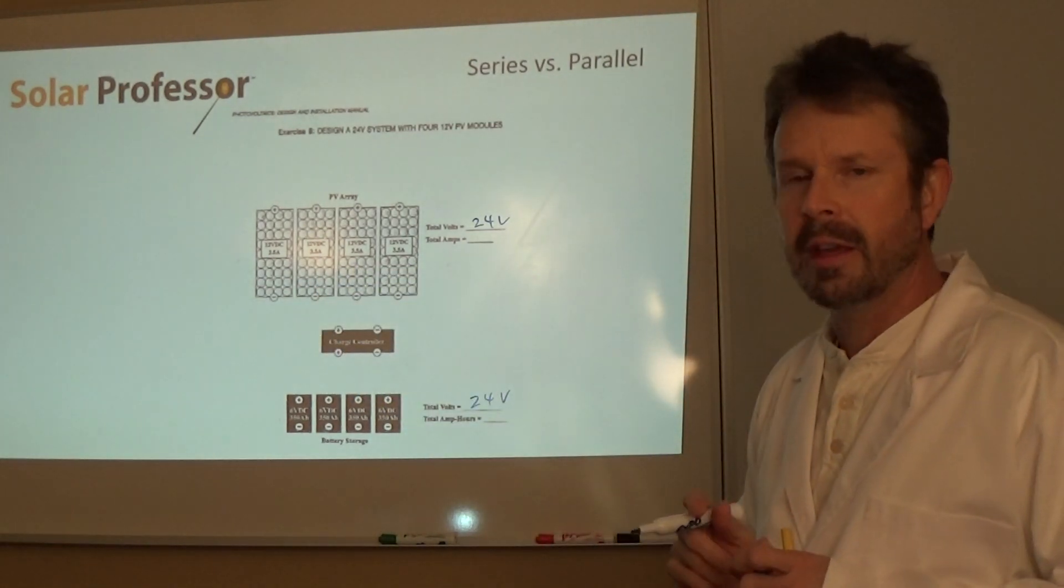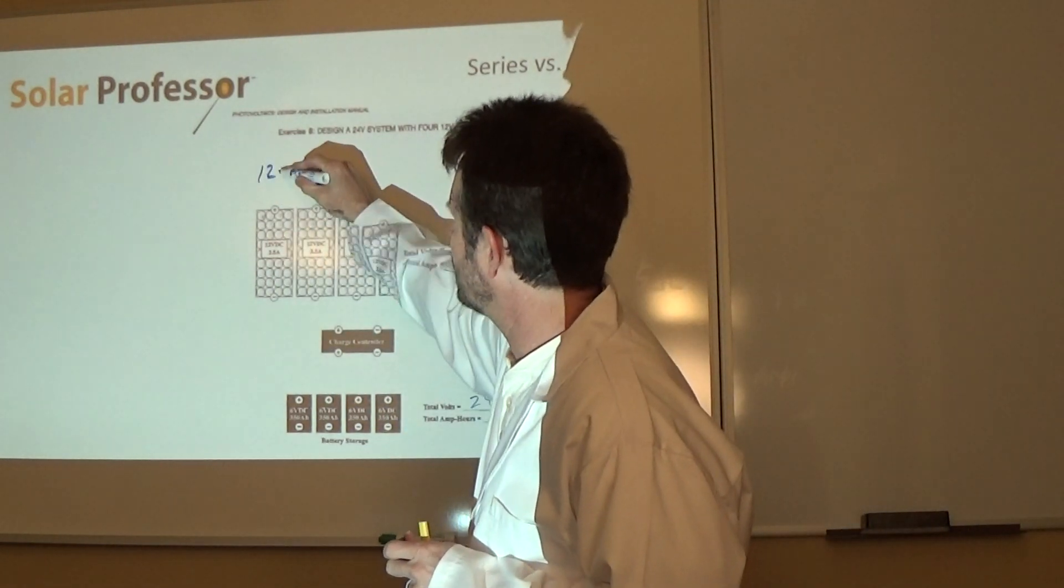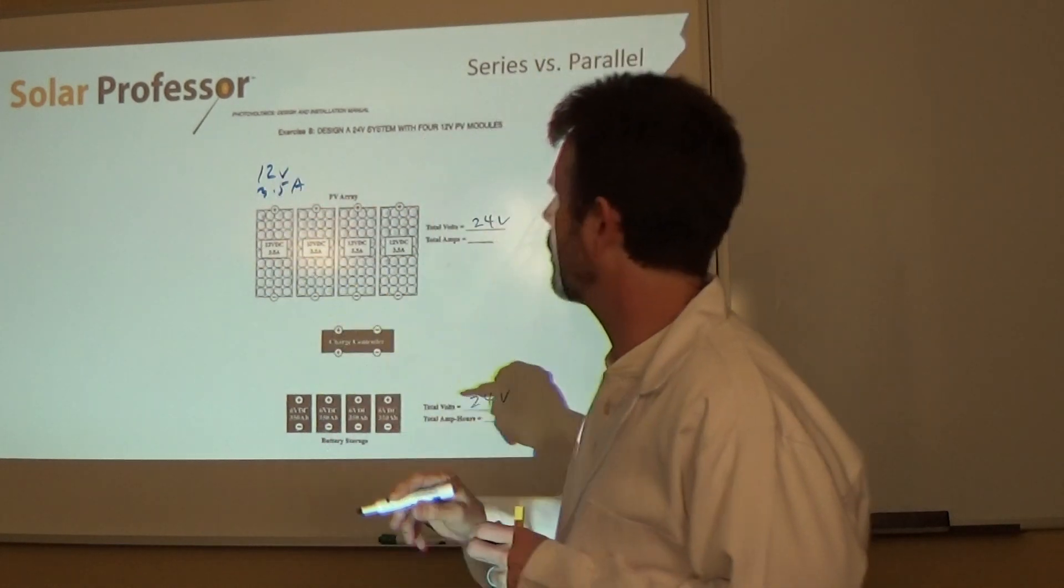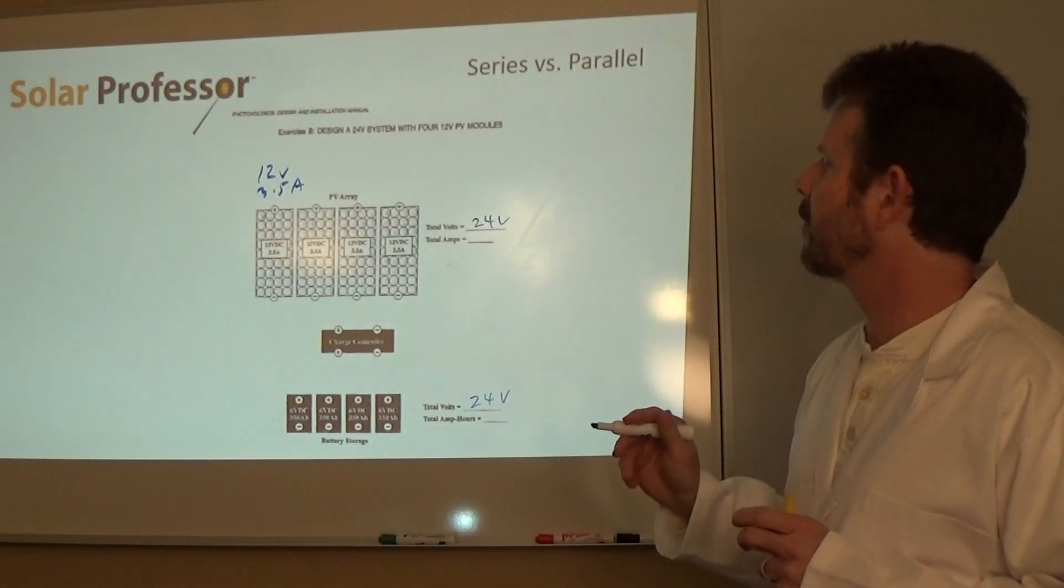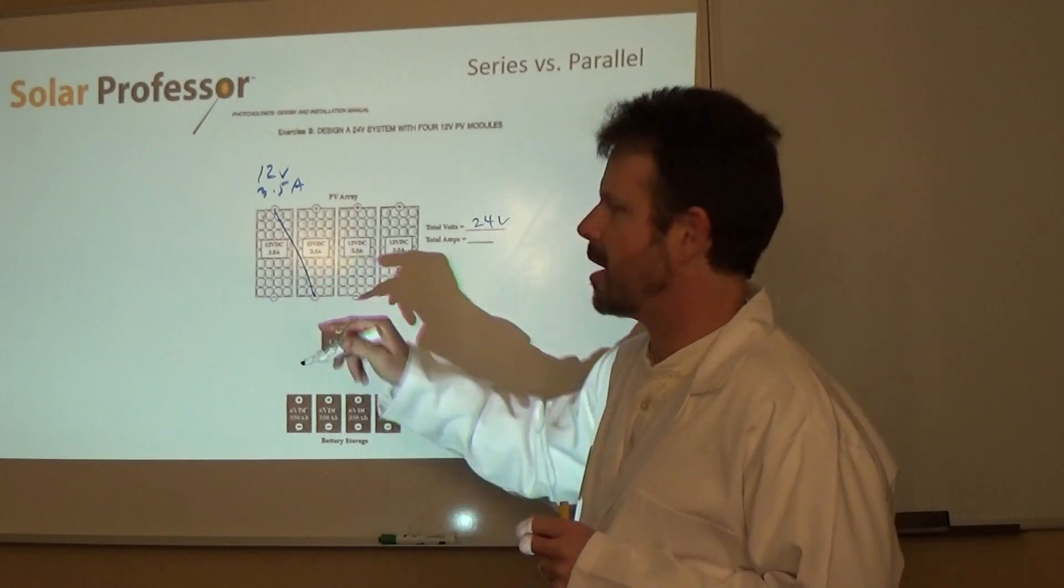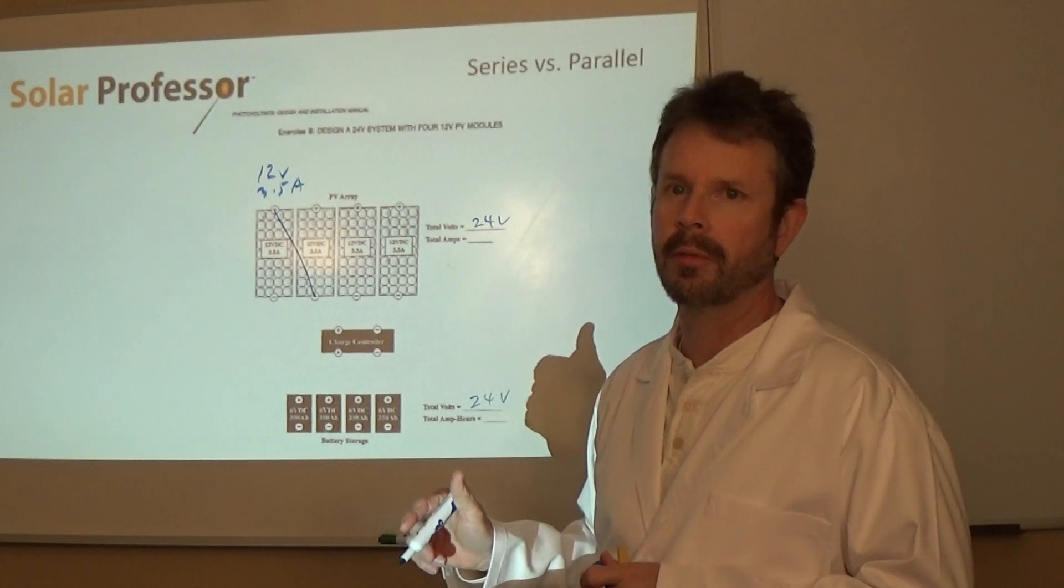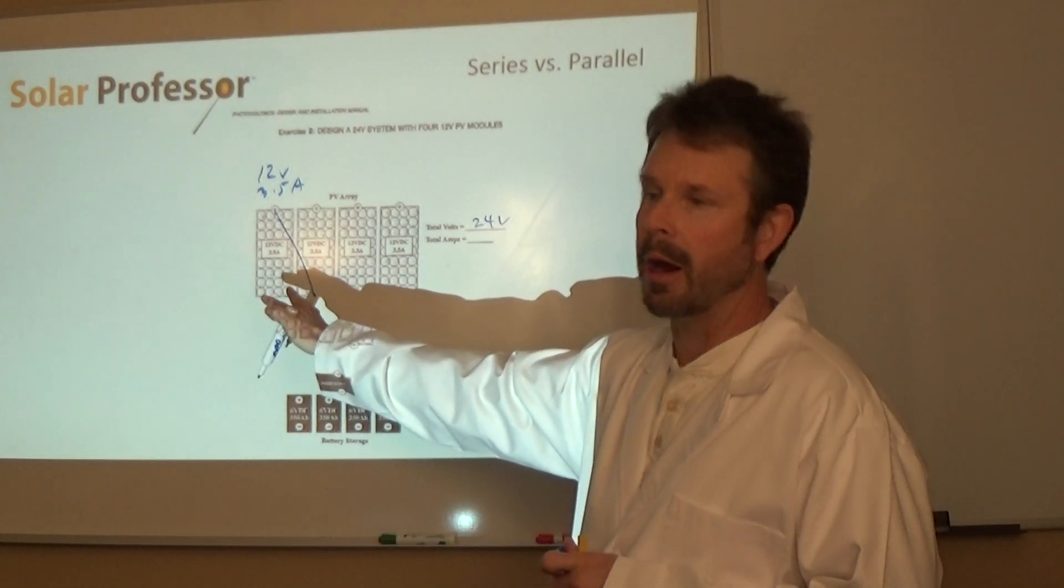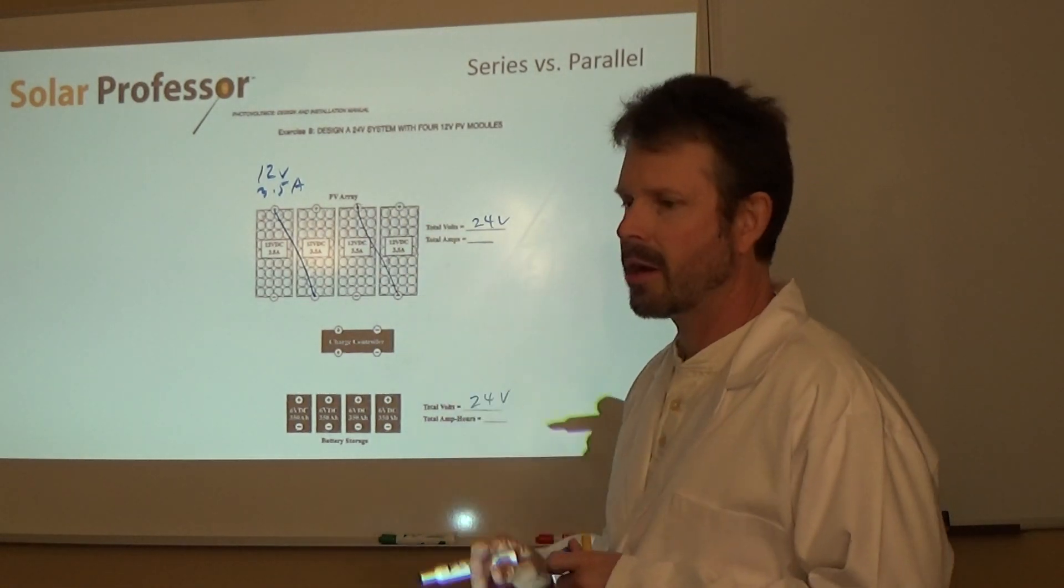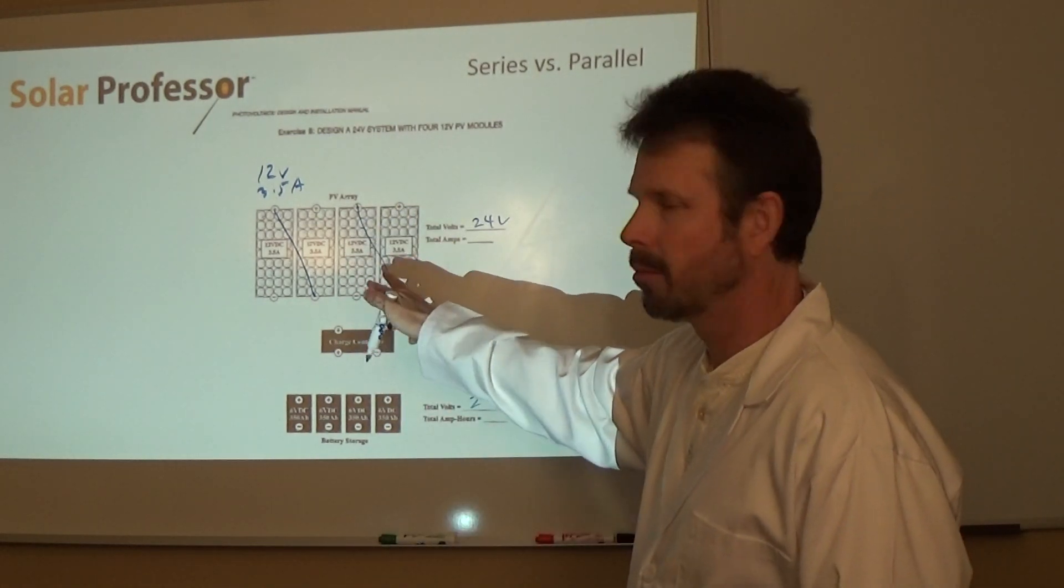This says here, design a 24 volt system with four 12 volt modules. So these modules are 12 volts and 3.5 amps. And so we know that the total voltage of our system is going to be 24 volts. Always remember to label your stuff. Don't forget to put your units there. The question is, how do we connect these together in series and or parallel to go ahead and complete this system and keep it 24 volts? Well, the answer is we know connecting things in series increases the voltage. These are 12 volts. So here's what we're going to do. We're going to connect negative to positive on one set. And what's that going to do for us? That is going to increase this set to 24 volts right there. We're done with that set.